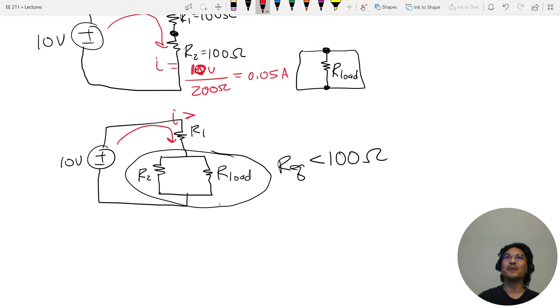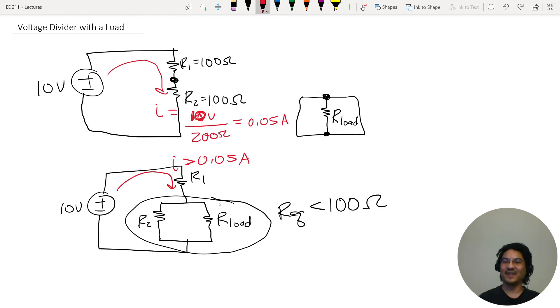So that means this current is more. The current here is more than 50 milliamps. By attaching the load I'm increasing the amount of current I'm drawing from the voltage source and I kind of screwed up the whole voltage divider because we don't know if this is 5 volts anymore.